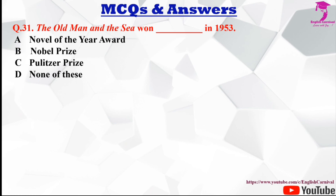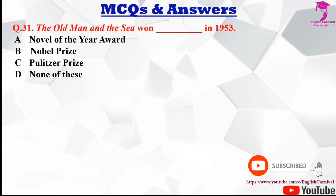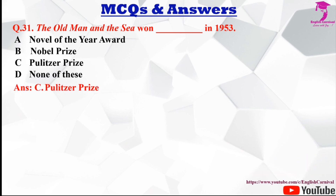Question number thirty-one: The Old Man and the Sea won dash in 1953. Options are A novel of the year award, B Nobel Prize, C Pulitzer Prize, and D none of these. The correct answer is C, this novel won the Pulitzer Prize in 1953.